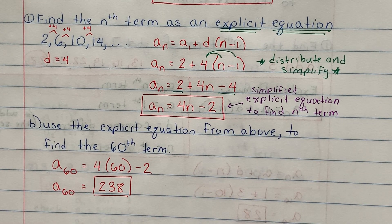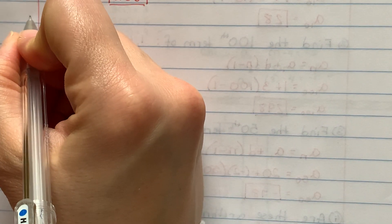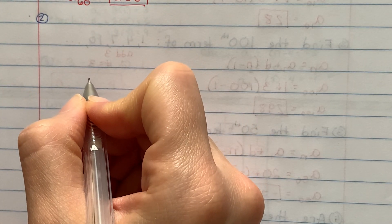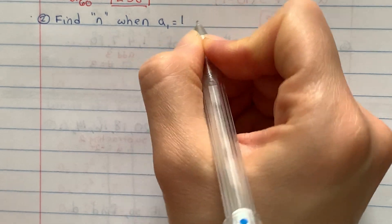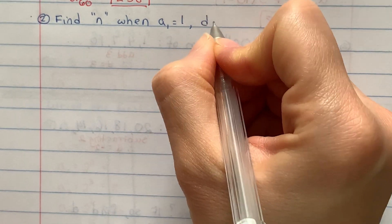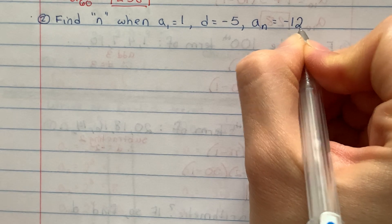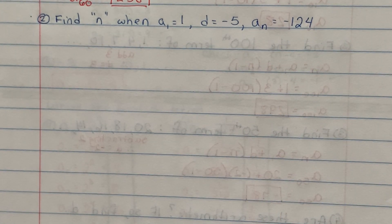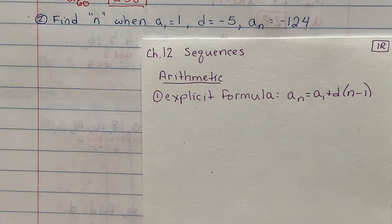I'm going to go on to a different type of question now. Question number 2: find n, when a sub 1 is equal to 1, d is equal to negative 5, and a sub n is equal to negative 124. So using that information alone, can we figure out what n is? I know this handy formula, so I'm going to start by writing it down.